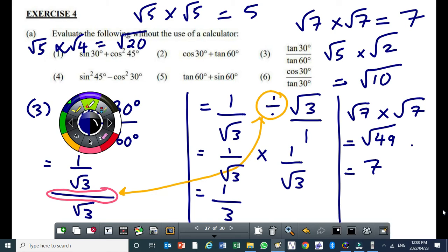Cos 30 divided by tan 30. Find the value without using a calculator. You must not use a calculator.